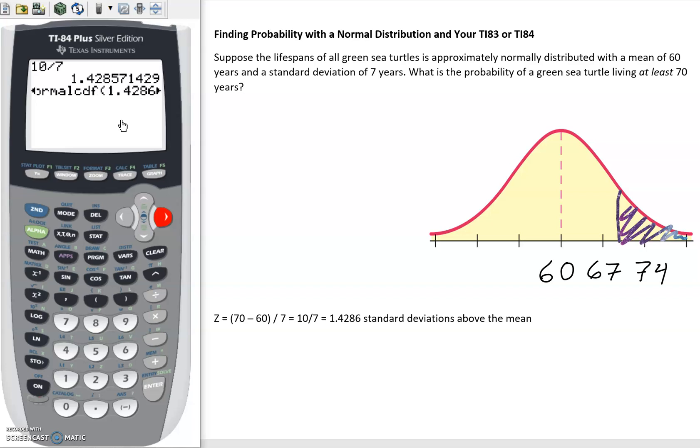You would just enter those manually. But if you hit enter we're going to get this. It's going to give us the probability as a decimal, 0.07655 and so on. So this means approximately 7.656 percent.